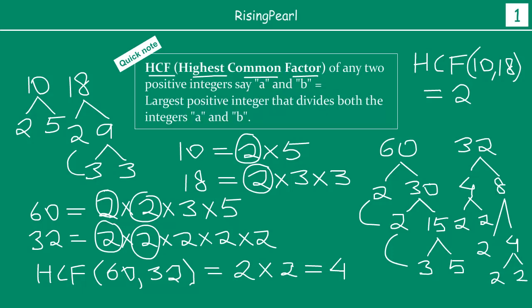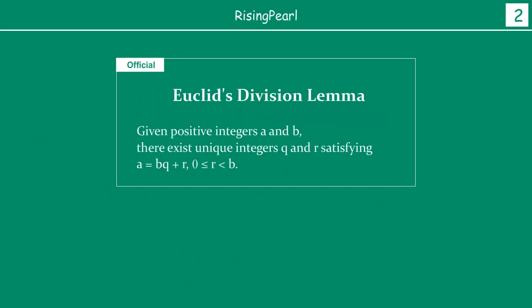This is all what we have already learned in our earlier classes. Now let's find out how Euclid's division lemma can help us find HCF of two given numbers. We saw in the last video that Euclid's division lemma states: given two positive integers A and B, there exist unique integers Q and R satisfying A = B × Q + R, where 0 ≤ R < B — which is really just the long division process written as an expression.